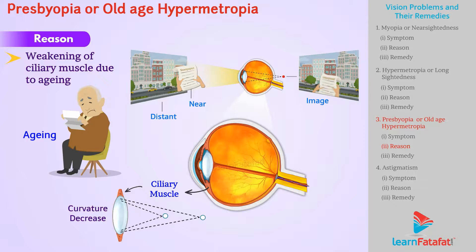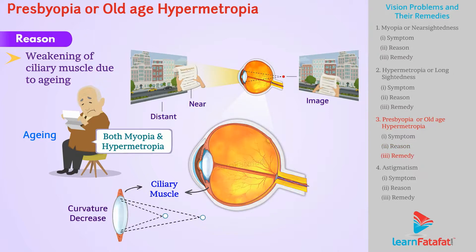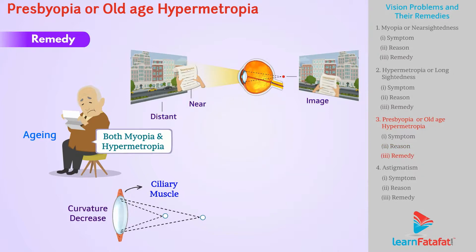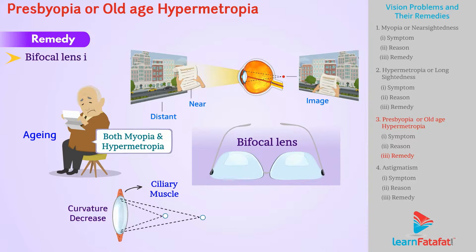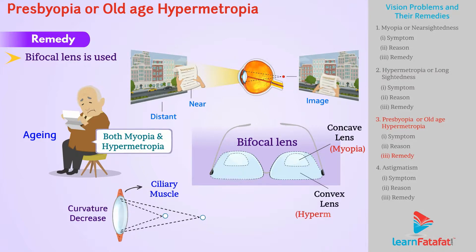Sometimes these people suffer from both myopia and hypermetropia. Remedy: to correct this defect, a bifocal lens is used. In a bifocal lens, the upper part is a concave lens to correct myopia and the lower part is a convex lens to correct hypermetropia.